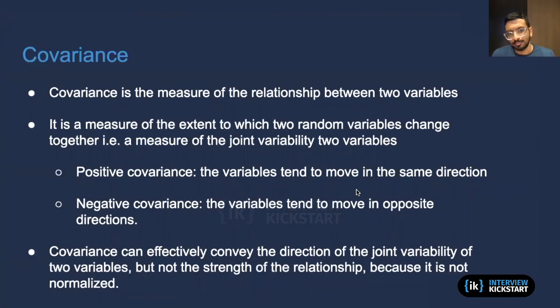It's basically the measure of the relationship between two variables. So you have a covariance that's typically defined between two specific variables. In other words, you can think of it as a measure of the joint variability of two variables. And if the covariance value is positive, that means that the variables tend to move together in the same direction. If the covariance is negative, that means that they tend to move in opposite directions.